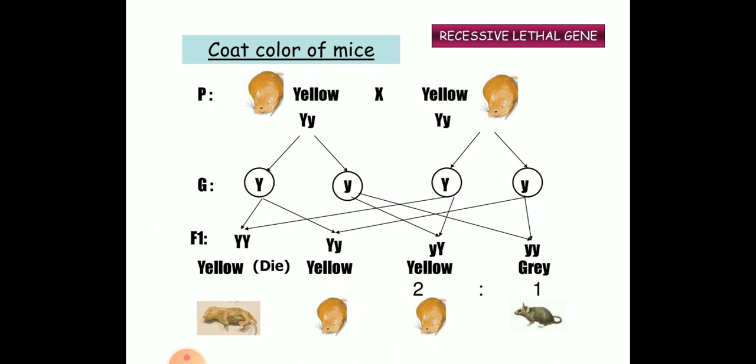In this session we have discussed about non-allelic interactions: complementary genes, supplementary genes, lethal genes, dominant epistasis and recessive epistasis — all very important. Genetics can be a little tough to understand in online classes, but you need to study the different types of examples by making the checkerboard. Thank you.